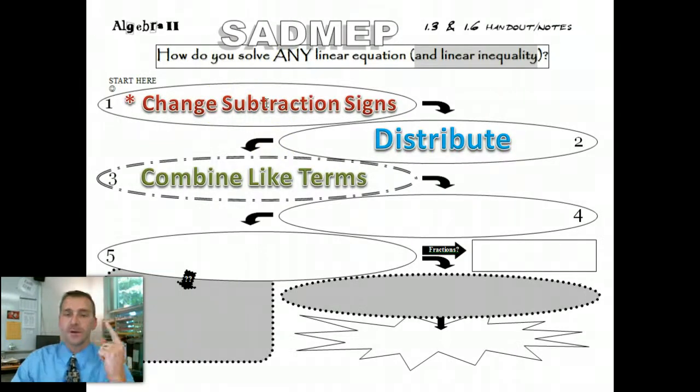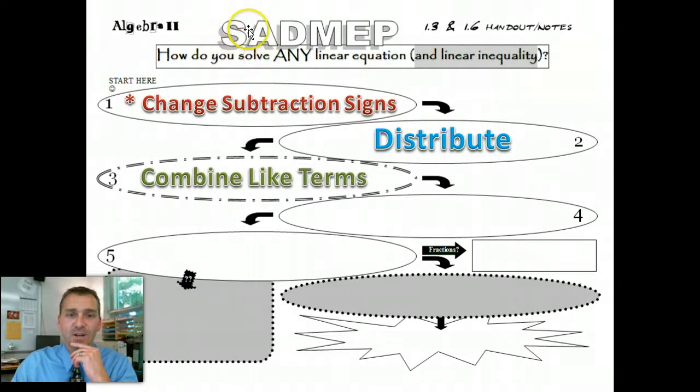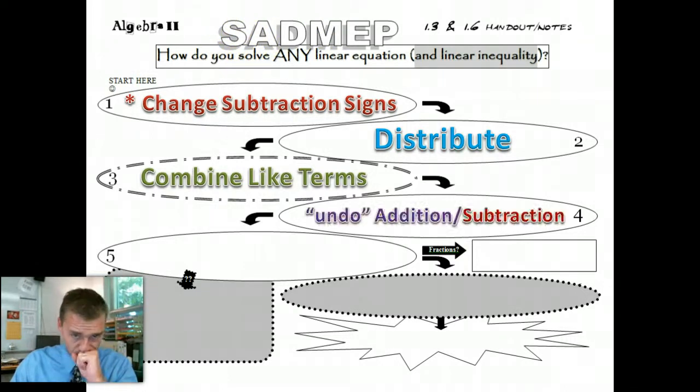Change subtraction signs is 1. Distribute if necessary is 2. Combine like terms. Now you're getting into step number 4, which is almost always going to be used. You have to undo this subtraction and addition. So that is step number 4.